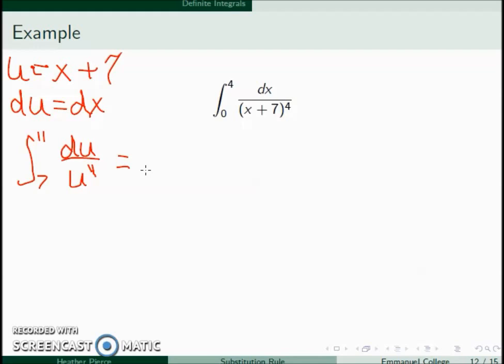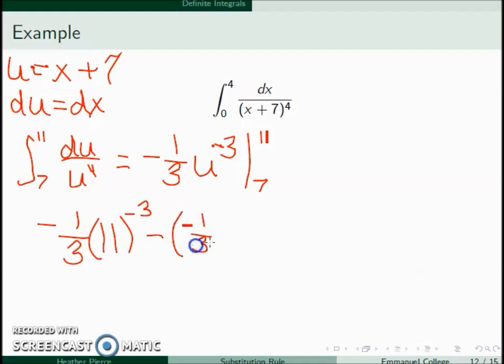Integrating this we get negative 1 over 3 u to the negative 3 going between 7 and 11. So this is negative 1 third times 11 to the negative 3 minus negative 1 third times 7 to the negative 3, and when we work this out this is approximately 0.00007.